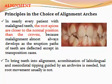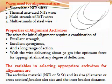In nearly every patient with mal-aligned teeth, the root apices are closer to the normal position than the crowns, because mal-alignment always develops as the eruption path of the teeth is deflected, except in transposition cases. To bring these into alignment, a combination of labiolingual and mesiodistal tooth movement guided by arch wire is needed, but root movement usually is not. Wires used for alignment are super-elastic NiTi wire, thermally activated NiTi wire, multi-strand NiTi wire, and multi-strand steel wire.